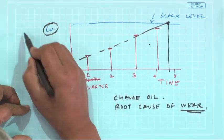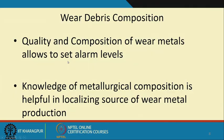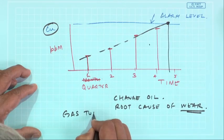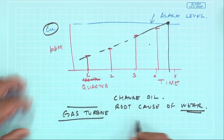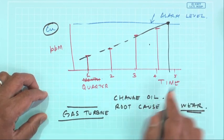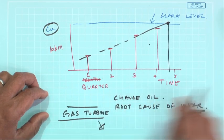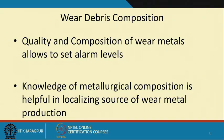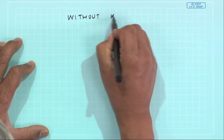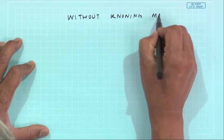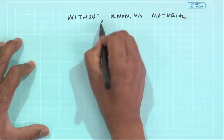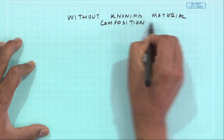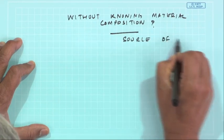Knowledge of metallurgical composition of wear metals — such as copper — is helpful in localizing the source of wear metal production. For example, in a large gas turbine, many of which we import for aircraft, the material composition is sometimes not known because it is a trade secret of the manufacturer. Without knowing the material composition, it becomes difficult to find the source of wear.